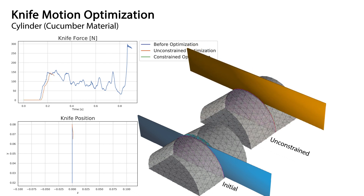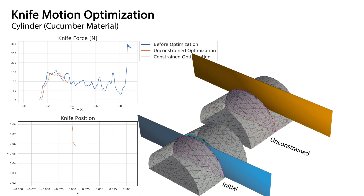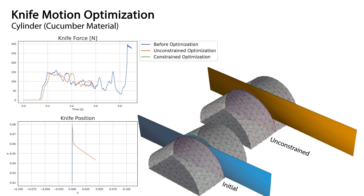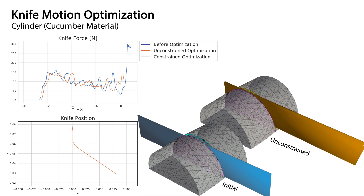After 50 iterations with Adam optimization, we see a reduction in average knife force by 15%. However, the knife slices sideways further than its blade length.